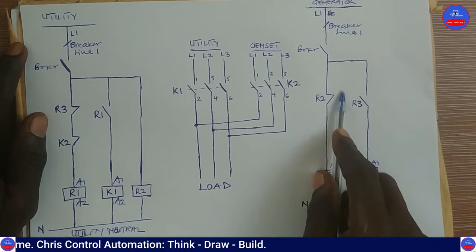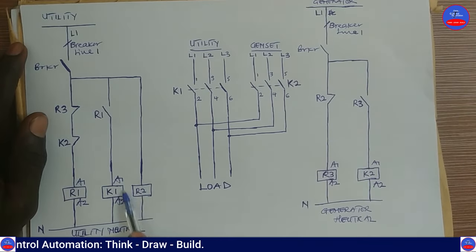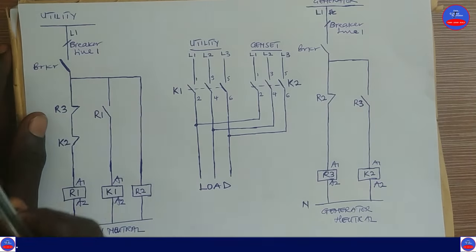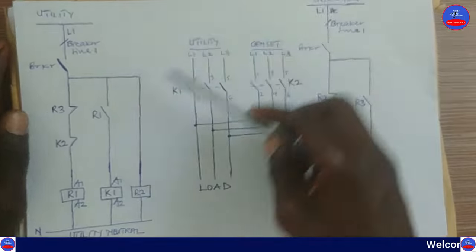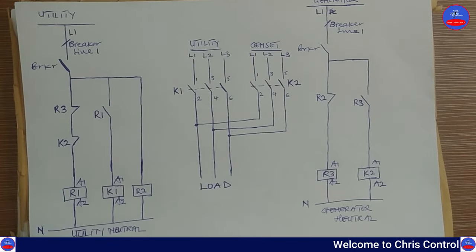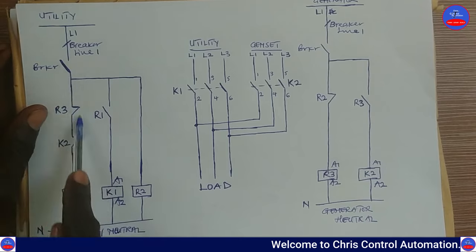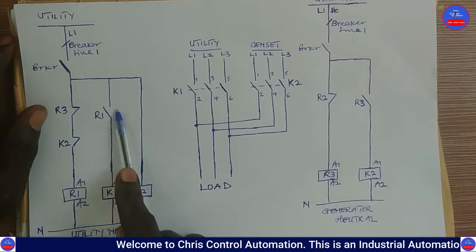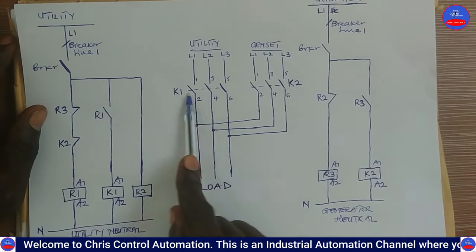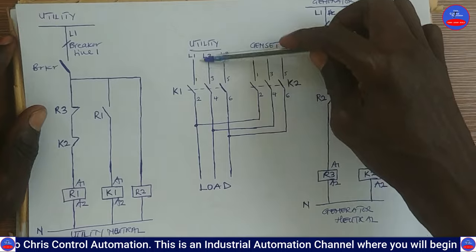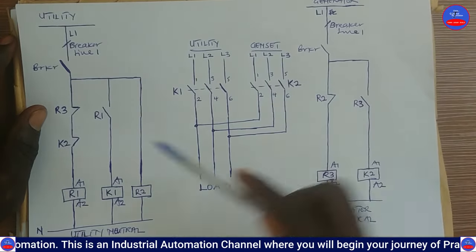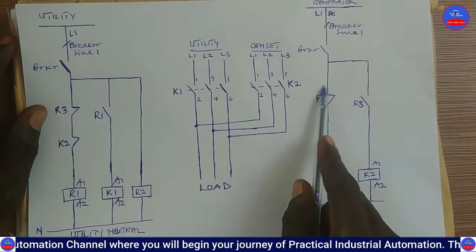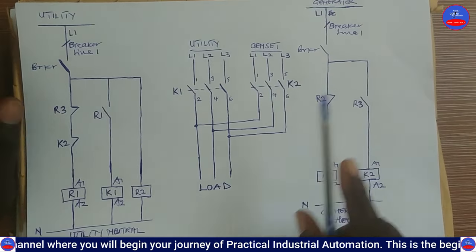R2 is serving as a sensor for the utility — I will explain that. So we close the main breaker, current flows through to energize R1, R1 closes to energize K1, K1 closes and the main utility power is applied to the load. At the same time, R2 also energizes and opens its contact on that side.